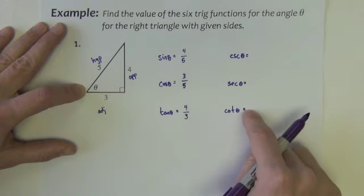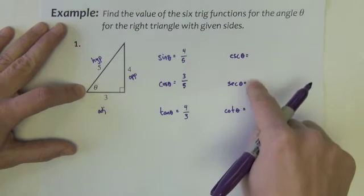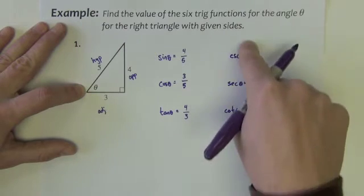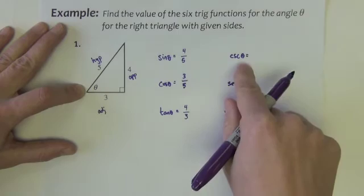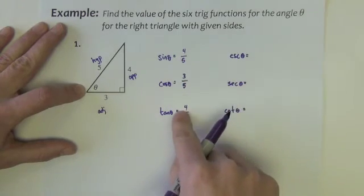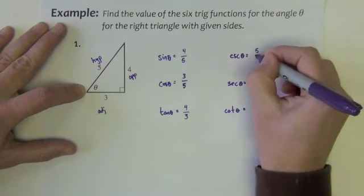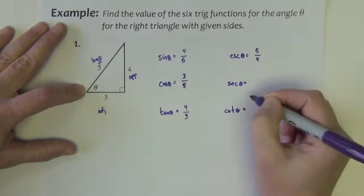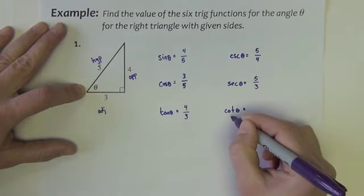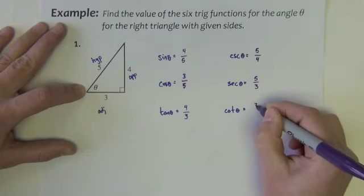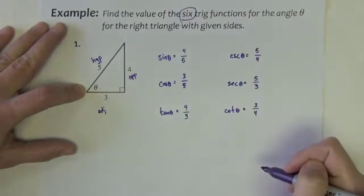Now on the cosecant, secant, and cotangent, you can memorize the hypotenuse over opposite, hypotenuse over adjacent. You can memorize those definitions or you can know just the fact that these three are the reciprocals of these. So if I have sine is four-fifths, cosecant is simply five-fourths. Secant is cosine's reciprocal, so it's five-thirds. Cotangent is tangent's reciprocal, so it's three-fourths. And I've got all six trig functions.